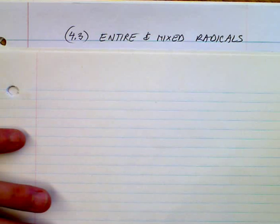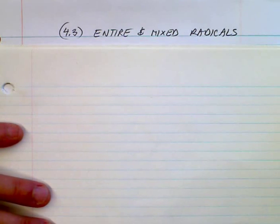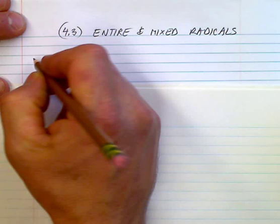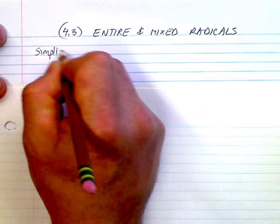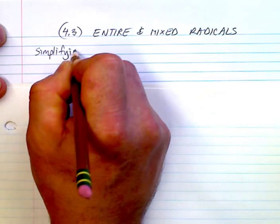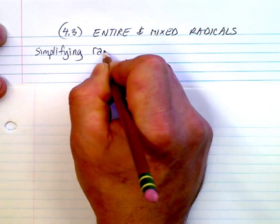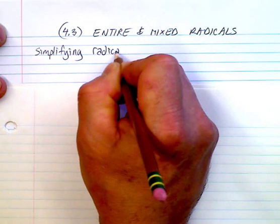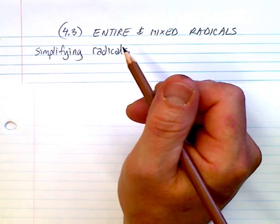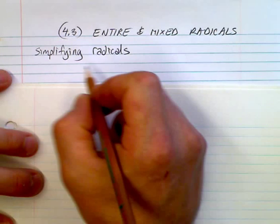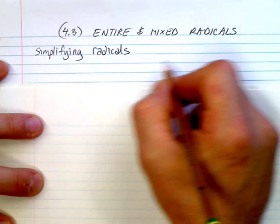Okay, 4.3 mixed radicals and entire radicals. This is basically what we're going to call simplifying radicals. It's not necessarily always simplifying, but it's being able to go back and forth — sometimes you want an entire radical, sometimes you want a mixed radical.